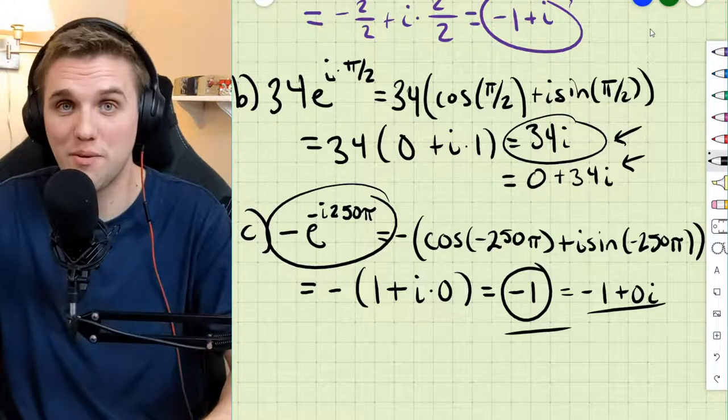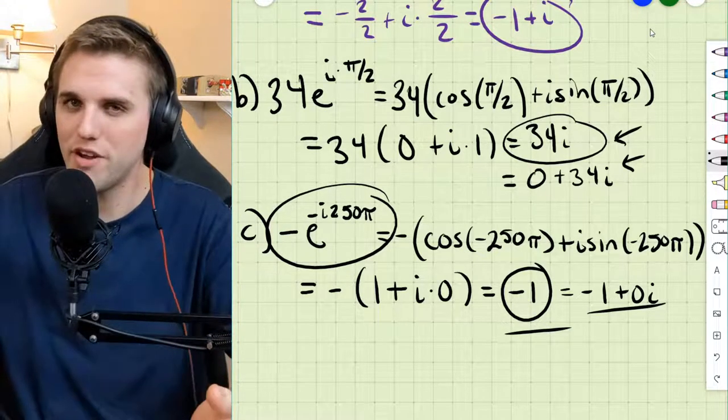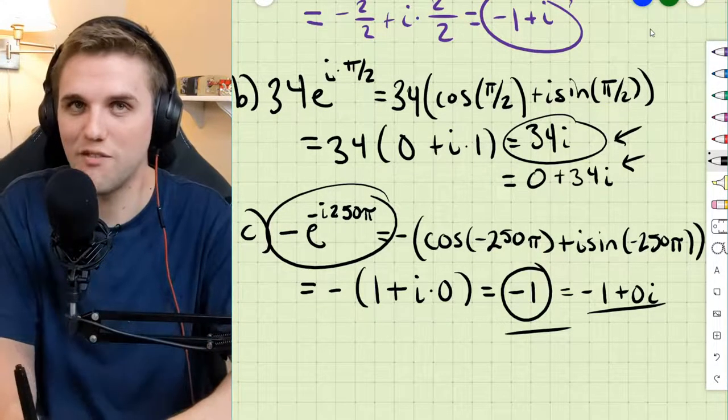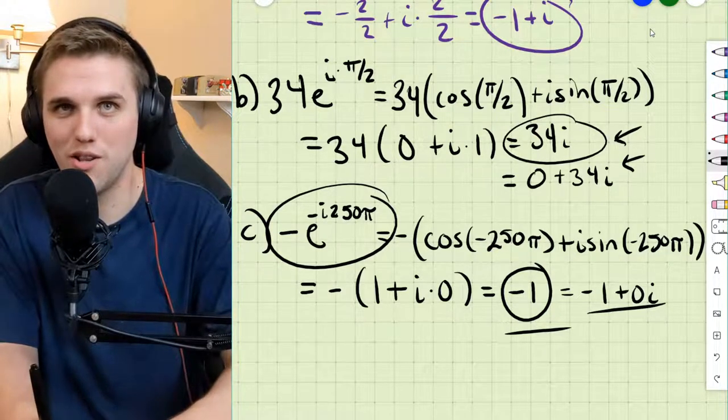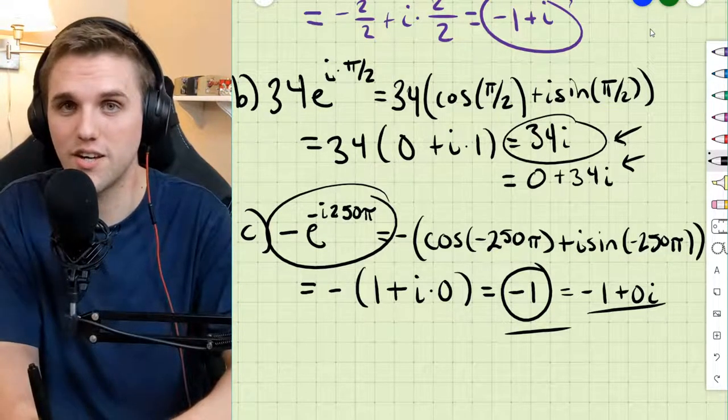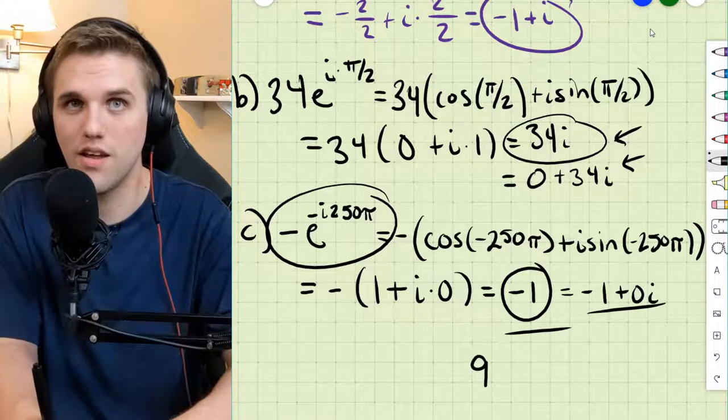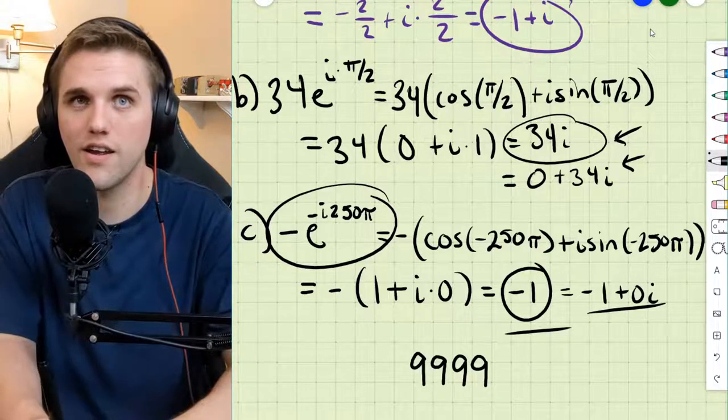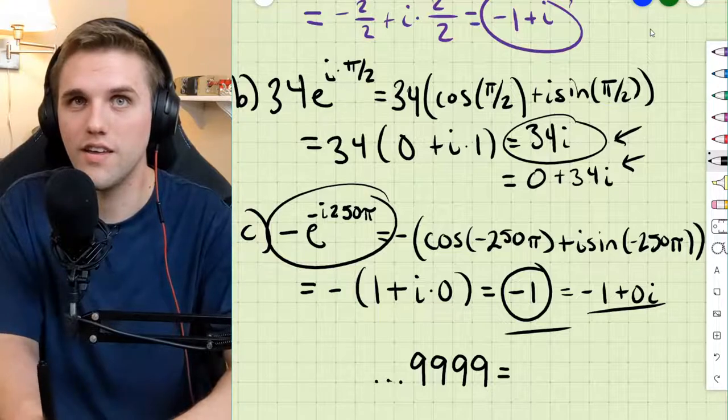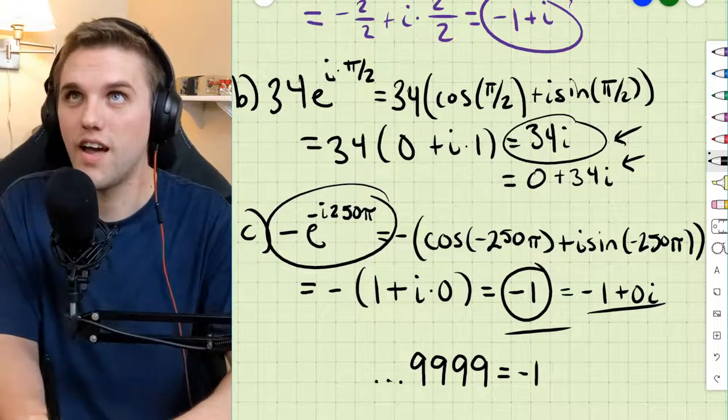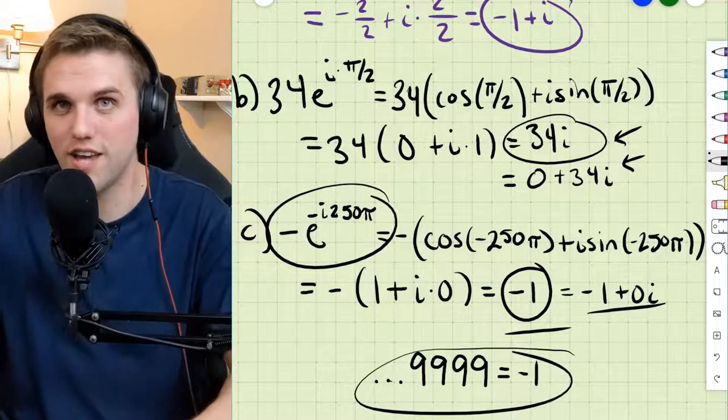Really interesting way of representing the number negative 1. There are a lot of interesting, unique ways of writing negative 1. I'll give you one to look up online. Get ready for this rabbit hole I'm about to send you in. 9, 9, 9, 9... is negative 1. Have fun. I'll see you in the comments section.